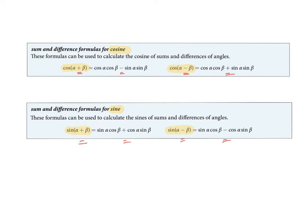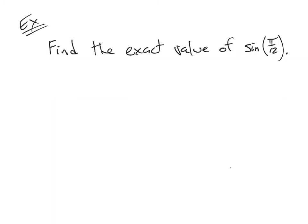The goal of this video is to work through some examples where we use these two new identities. One of the first things you're going to use these identities for is calculating the exact values of some radian measures that are not on our usual unit circle — values we don't have memorized, like sine of pi over 12. We're going to use our new identity for sine to turn this into a sum or difference so we can find exact values off the unit circle.